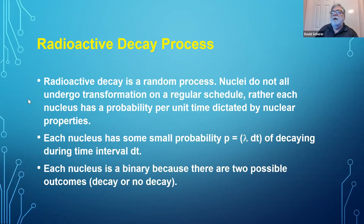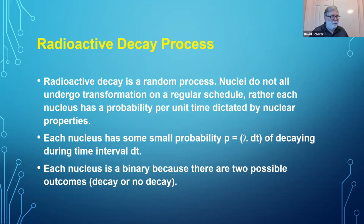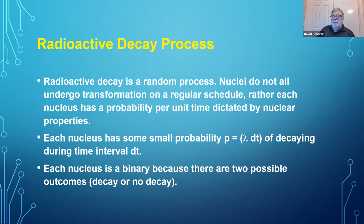For many people who work in radiation safety this is obvious, but we have some people who've not been in this field before. Radiation decay is a random process. We don't have a regularly scheduled decay rate — these are not like soldiers marching in a line. It's a probabilistic event; transformations take place at a certain probability per unit time, but there's variation, and that variation can cause problems for our measurements.